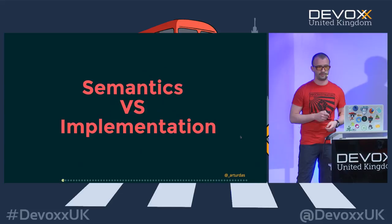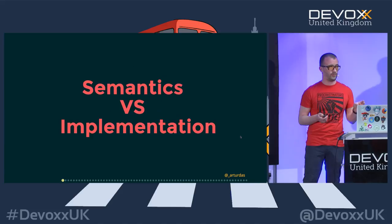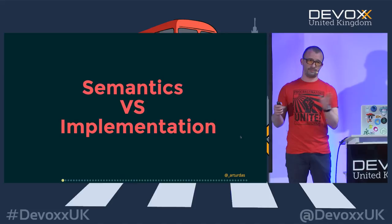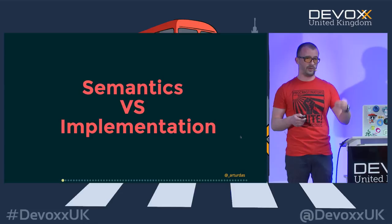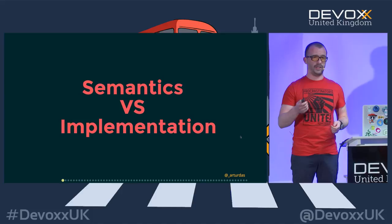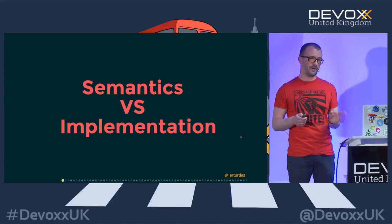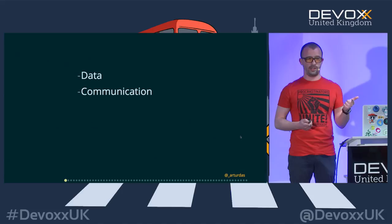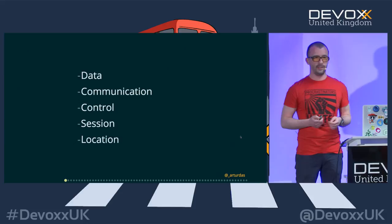However, as your applications grow larger, you'll find yourself in trouble just managing state through those four categories. You'll want something more semantically relevant to your application — my recommendation is to store state by what it's meant to do. I managed to figure out five categories: data, communication, control, session, and location.